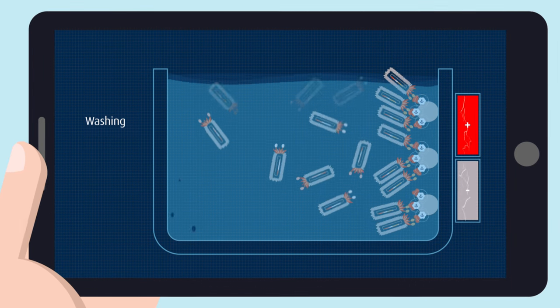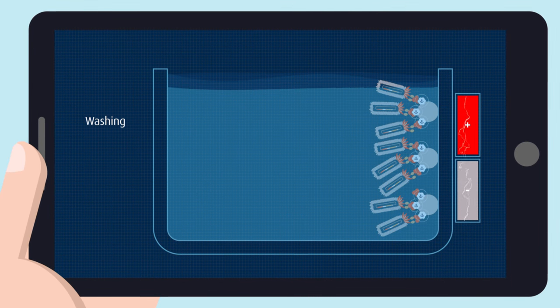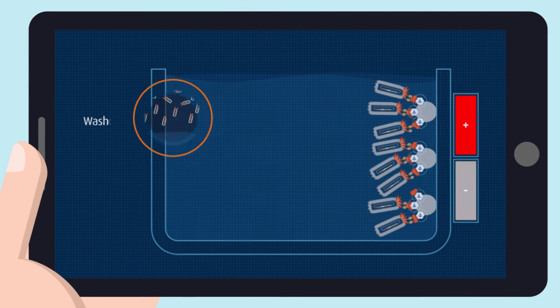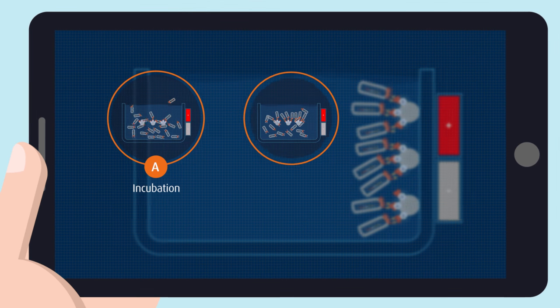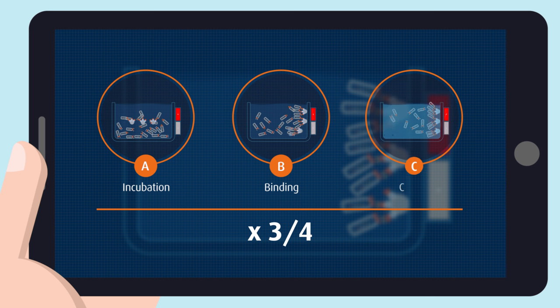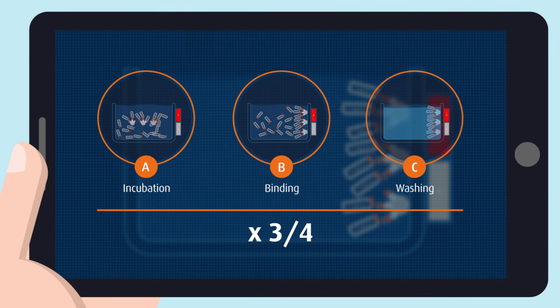A washing step allows the removal of unbound VHH. Bound VHH are then eluted and amplified in bacteria. Three to four rounds of this selection are necessary to obtain specific antibodies.